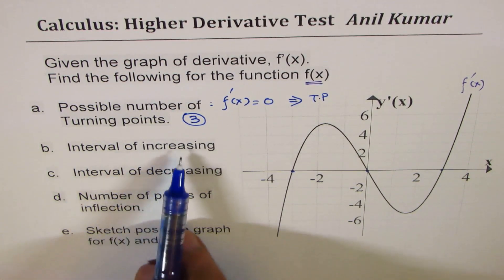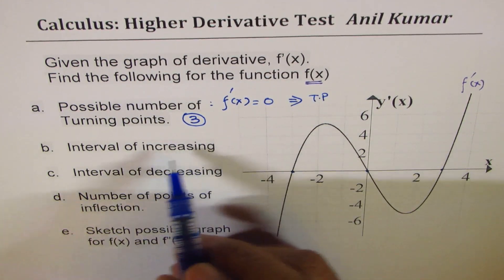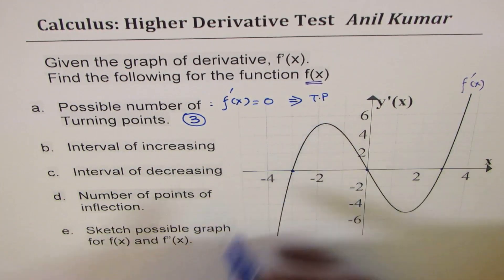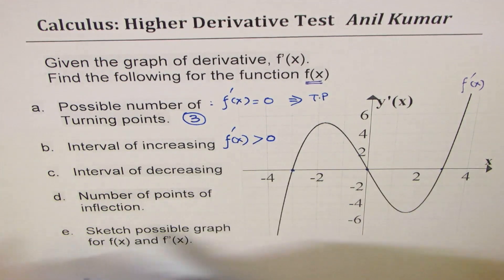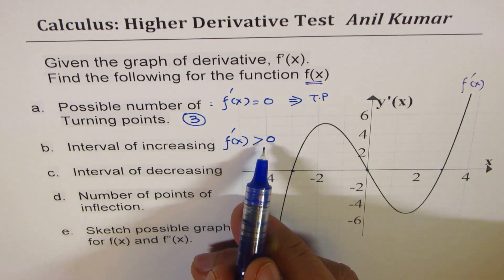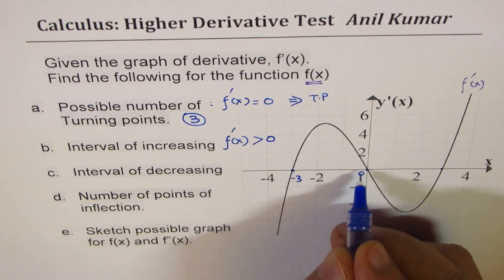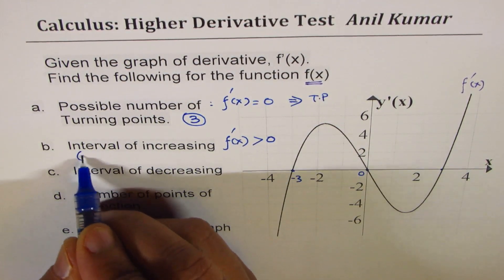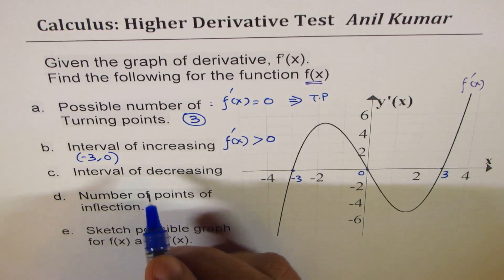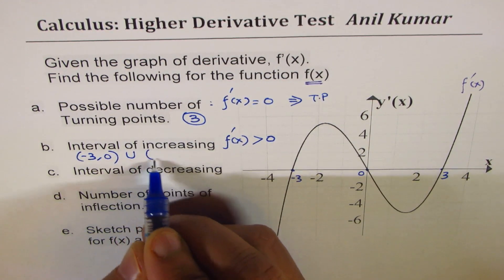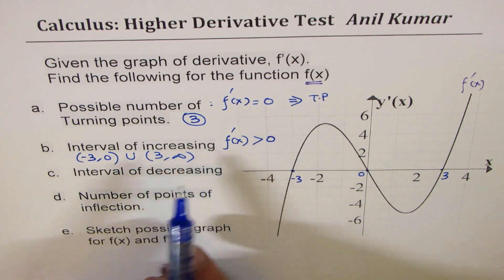The next part is interval of increasing — when is f(x) increasing? From the derivative, the function is increasing when the derivative is greater than zero. As you can clearly see, from minus three to zero the derivative is positive, and after three the derivative is positive. So the interval of increasing is (-3, 0) union (3, ∞).